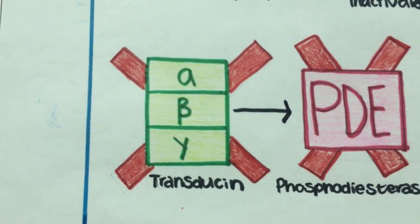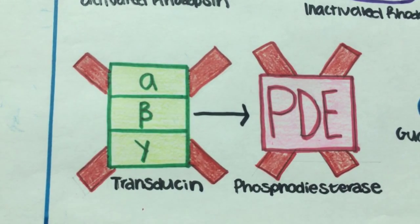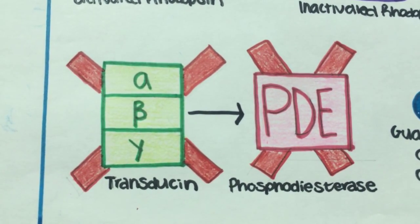This inhibits the ability of rhodopsin to activate transducin. Without activated transducin, PDE also turns off.